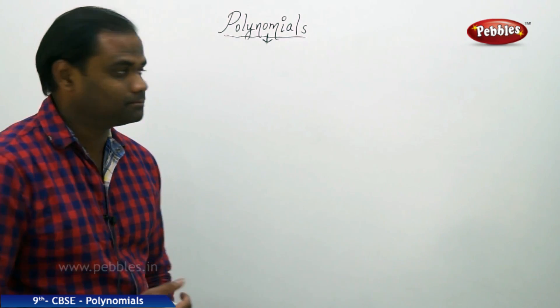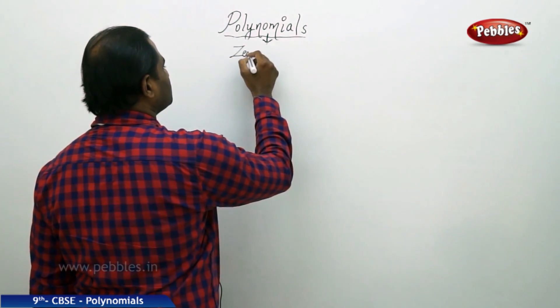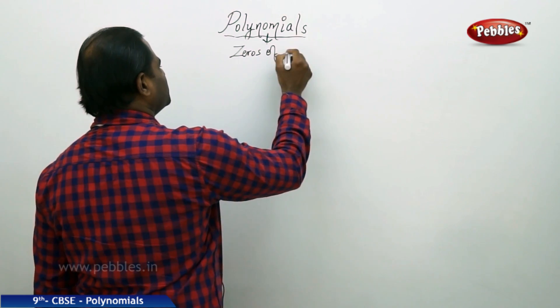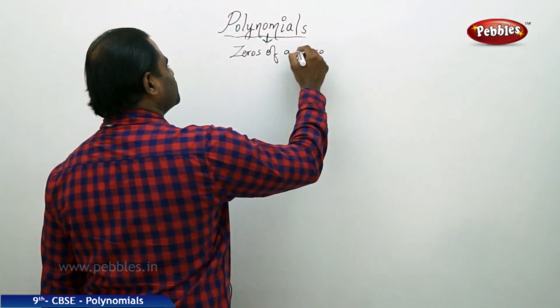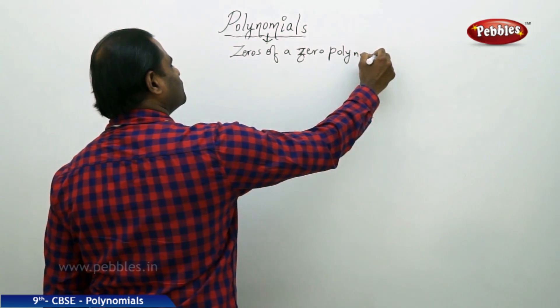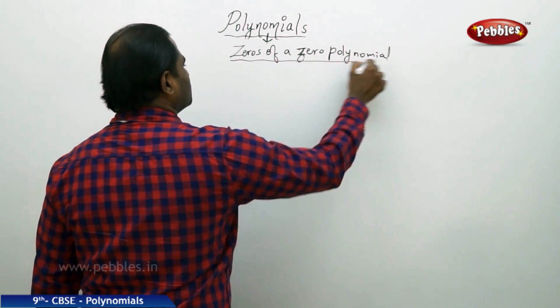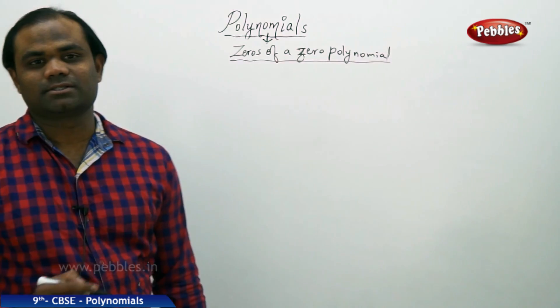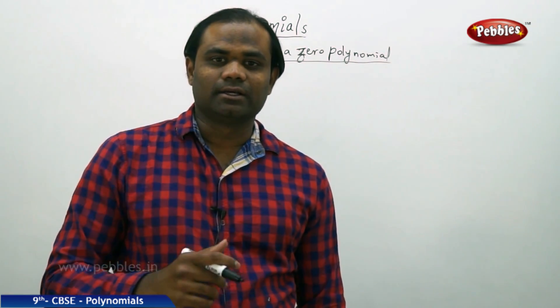Now let's take an exceptional case where we need to find the zeros for a constant polynomial — specifically, the zeros of a zero polynomial. This is the exceptional case we are going to discuss in this session.